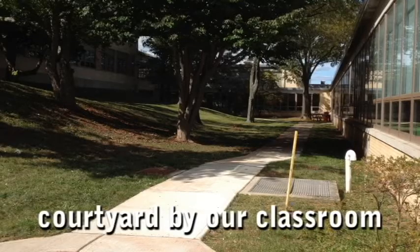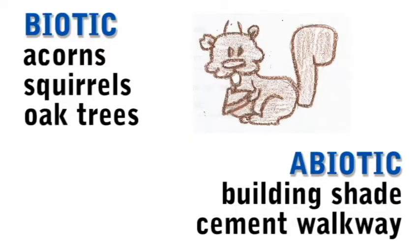In the courtyard by the classroom, some of the biotic factors include trees and squirrels, because the squirrels are going to be attracted to this area because of the trees that they can rest in. There's not going to be a lot of deer or other factors like that because they would have to go through the breezeway just to get into the courtyard, and they are more likely to be found in open grass areas.